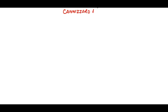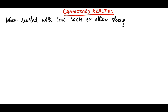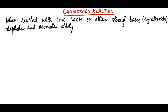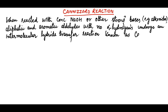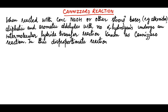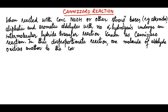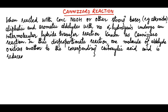In this lecture we will discuss the Cannizzaro reaction. When reacted with concentrated sodium hydroxide or other strong bases, for example alkoxides, aliphatic and aromatic aldehydes with no alpha-hydrogen undergo an intermolecular hydride transfer reaction known as the Cannizzaro reaction. In this disproportionation reaction, one molecule of aldehyde oxidizes another to the corresponding carboxylic acid and is reduced to the corresponding primary alcohol.